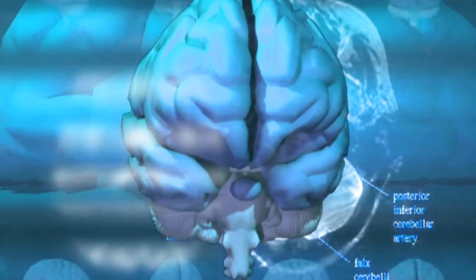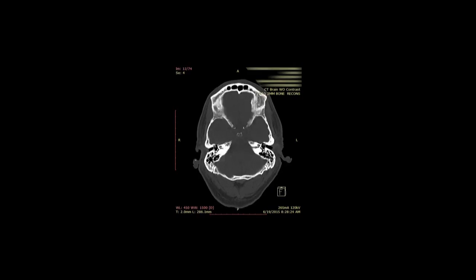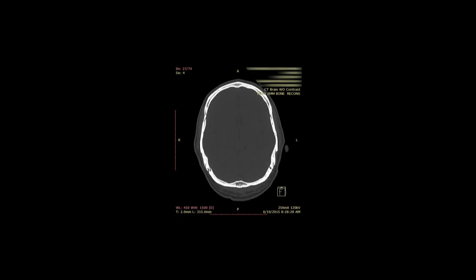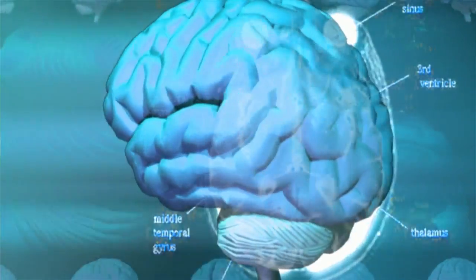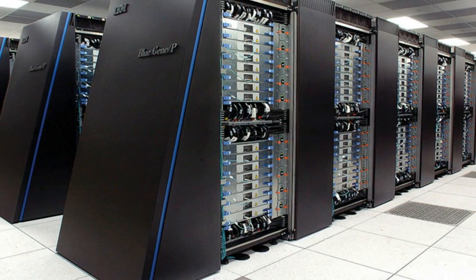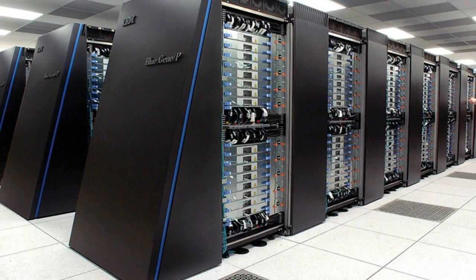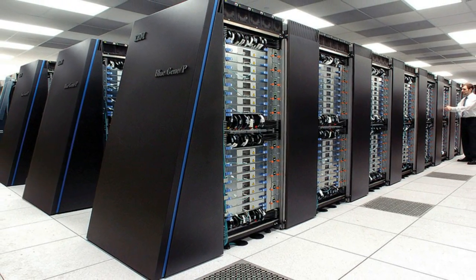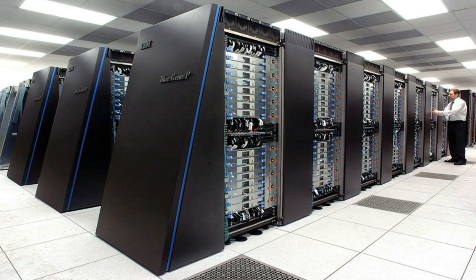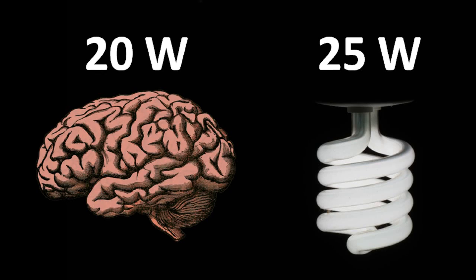Our brain is around 2% of our body weight, but it consumes more than 20% of the energy we need. It can simultaneously gather thousands of sensory inputs, interpret them, and it is learning, planning, and inventing. IBM estimates a supercomputer capable of doing similar things would drain around 100 megawatts of power — equivalent to a mini power plant — but our brain does all that consuming only around 20 watts, less power than a CFL bulb.